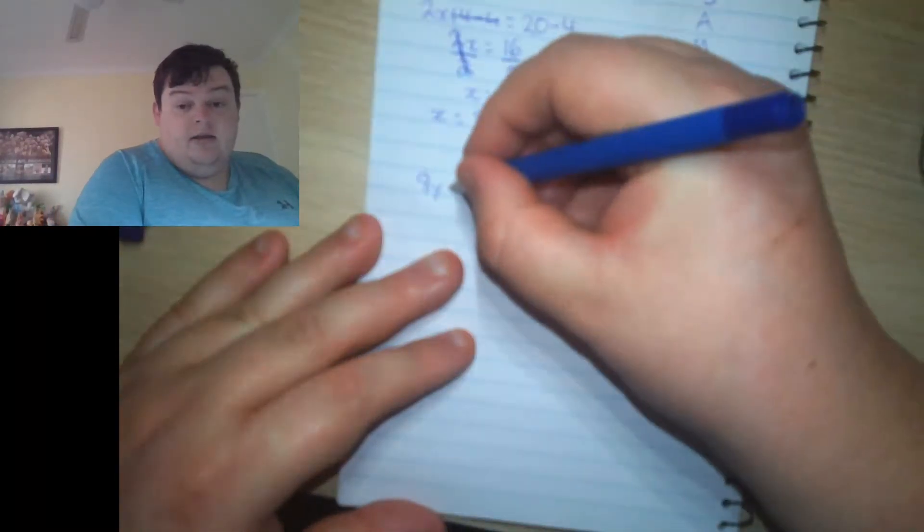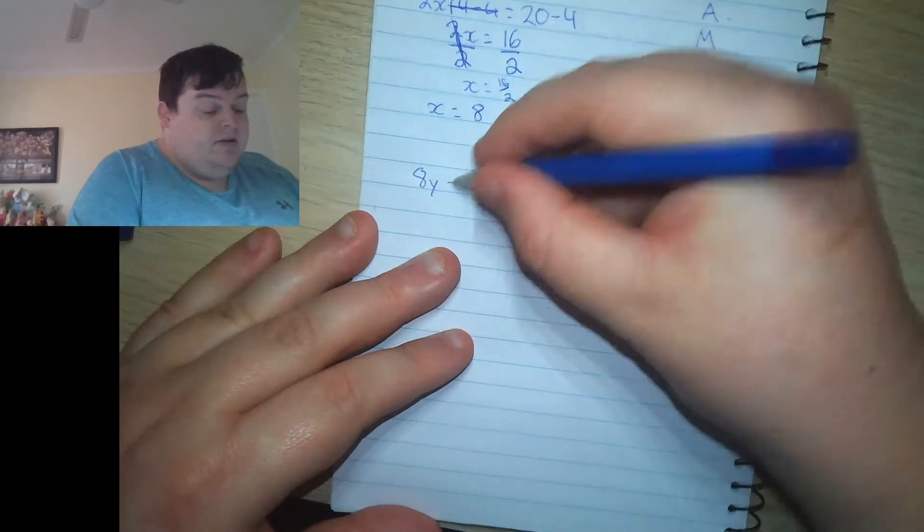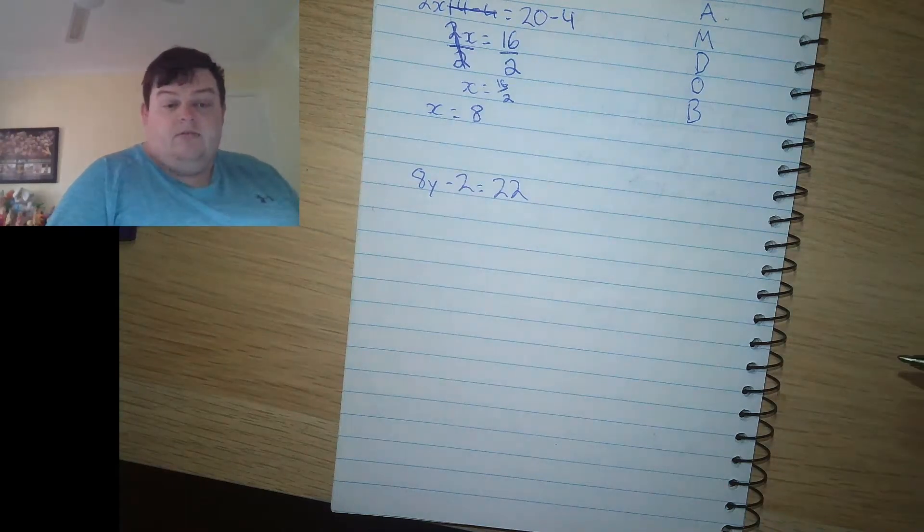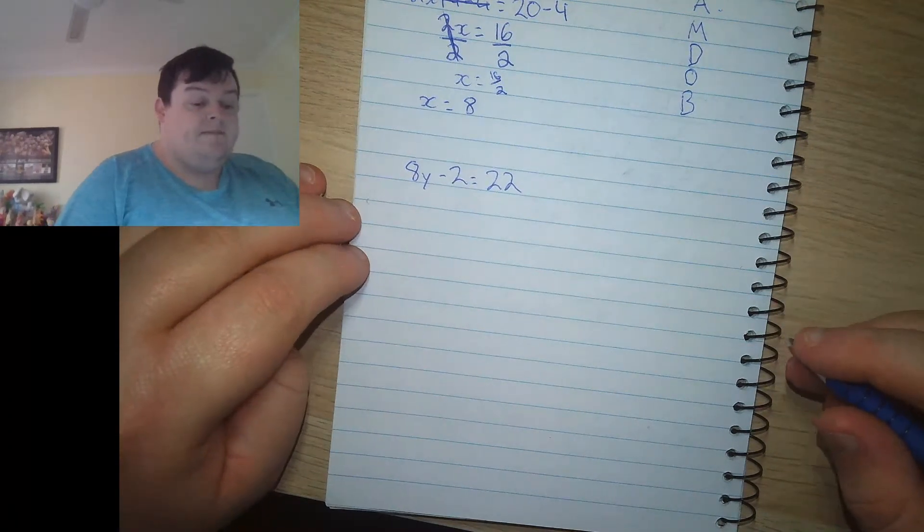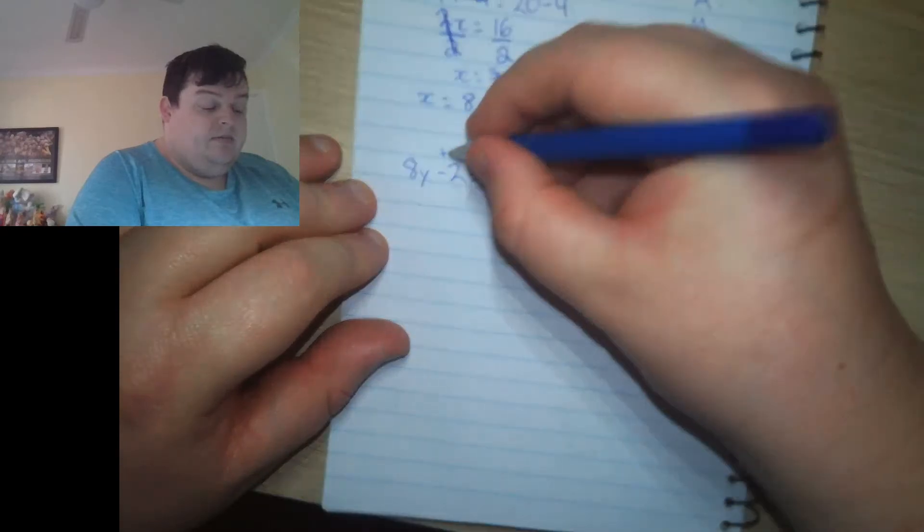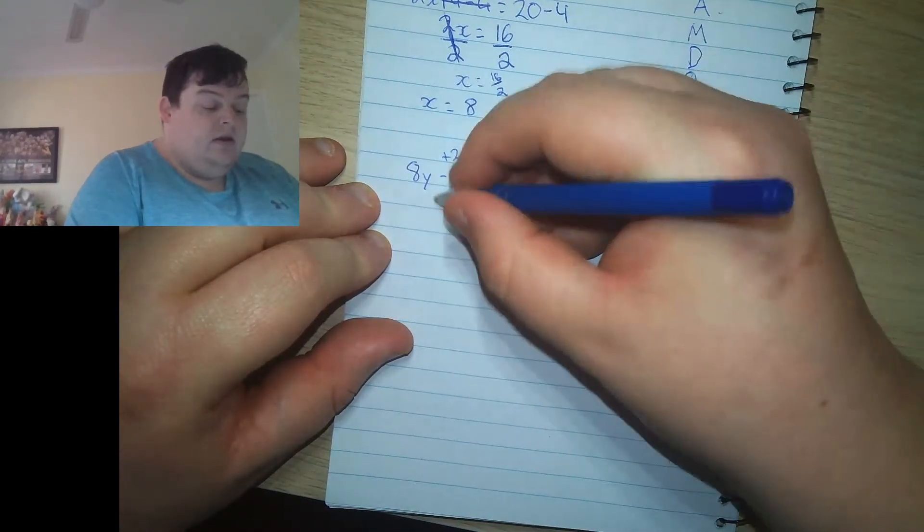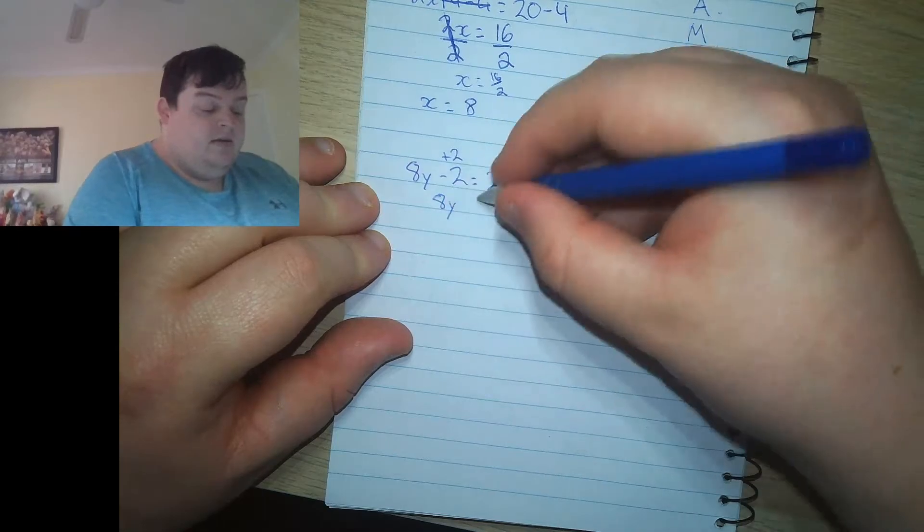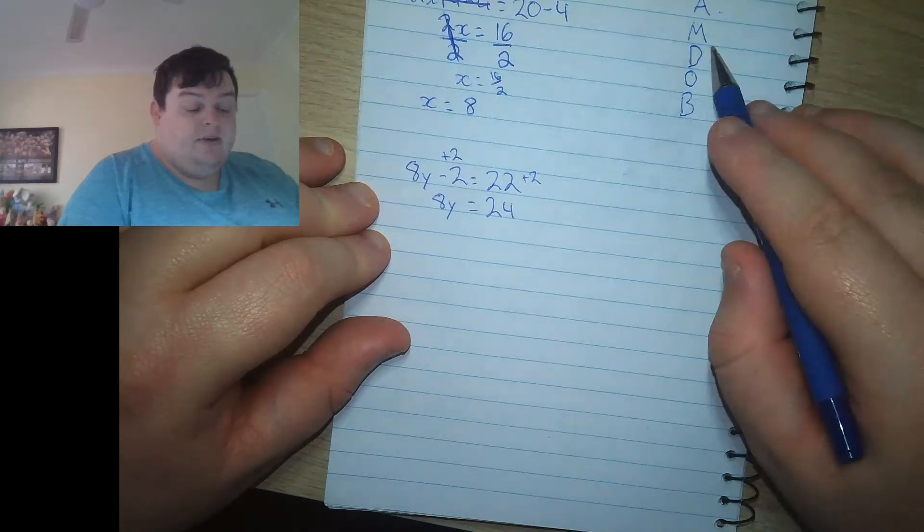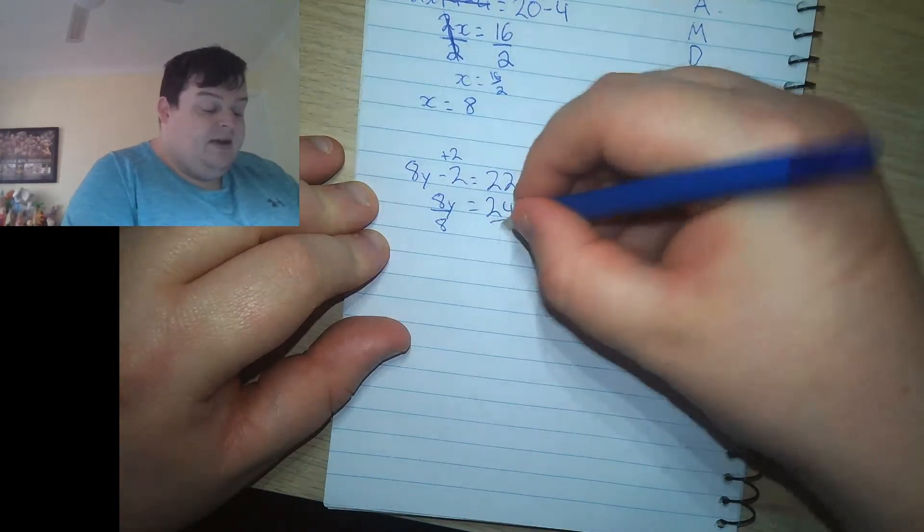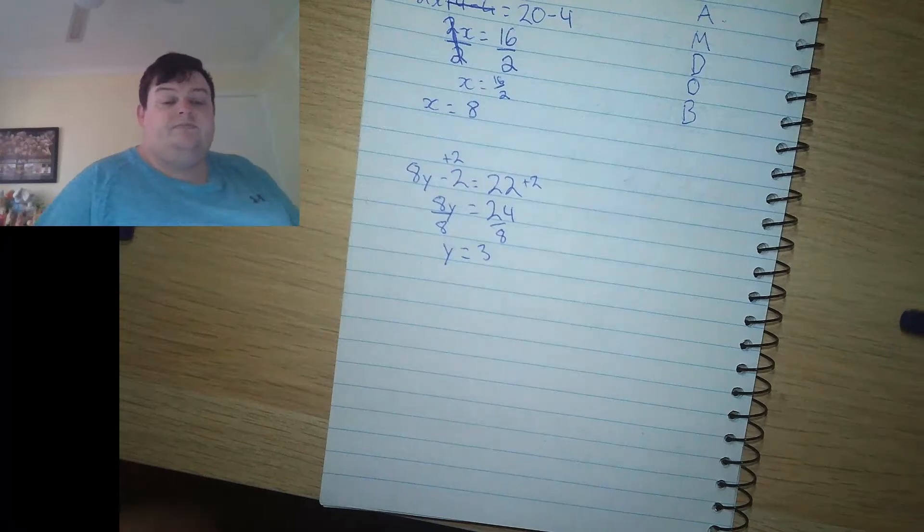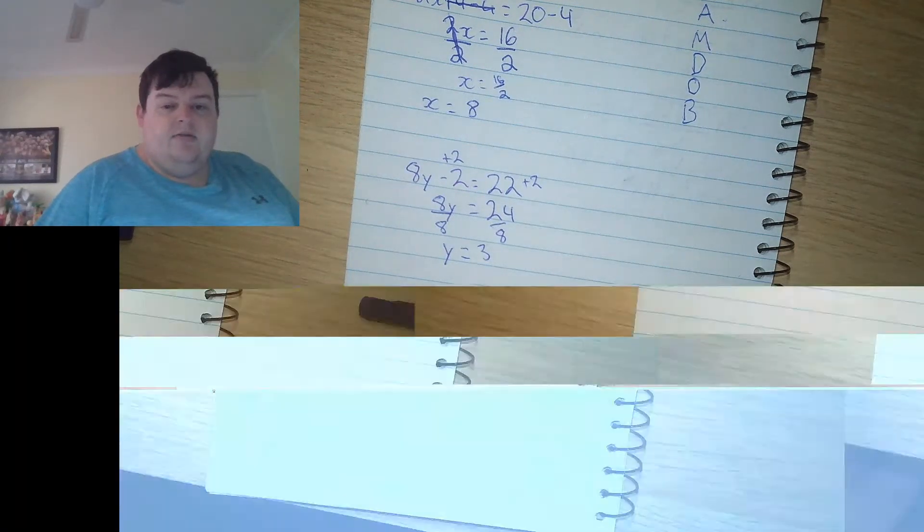Let's do 8y minus 2 equals 22. If you're feeling confident, pause the video and give this one a go and see how you go. Okay. I'll go through it now. So to undo a subtraction, I'm plussing 2 to both sides, which gives you 8y equals 24. To undo this 8, this multiplication, I'm dividing both sides by 8, which gives me y equals 3. Hopefully you got that.